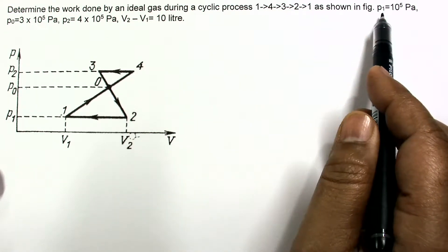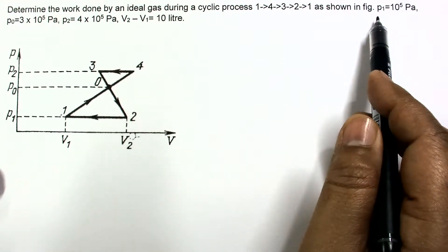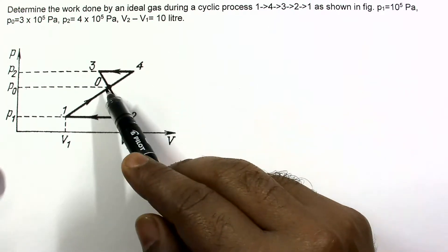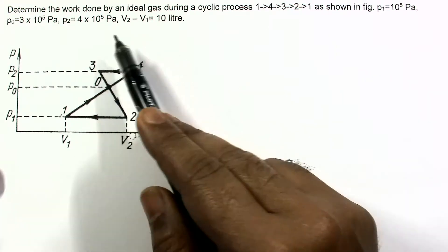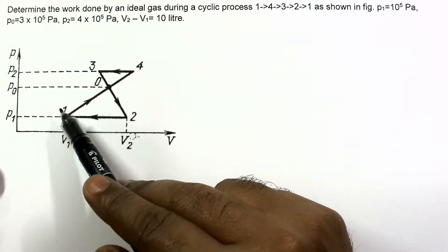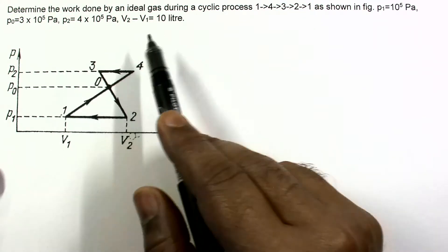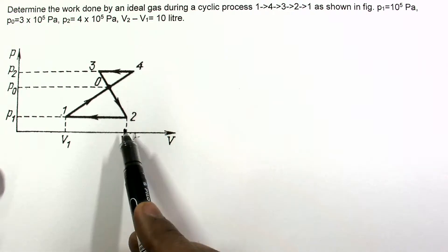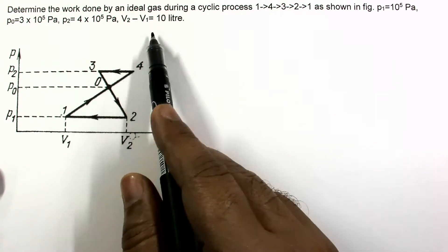We are given the pressures at point 1, pressure at point O, and pressure 2, so we are given these values P1, P0, and P2. Also, V2 minus V1 is 10 liters.